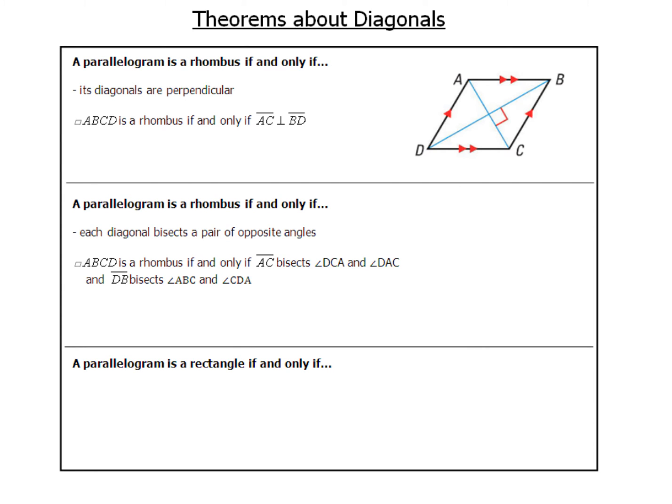Another theorem says a parallelogram is a rhombus if and only if its diagonals bisect a pair of opposite angles. For parallelogram ABCD, this means AC bisects angle DCA and angle DAC, and DB bisects angles ABC and angle CDA. Notice how the diagram is marked, because that's what happens in a rhombus.